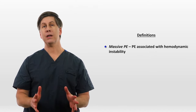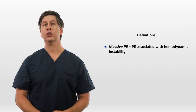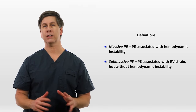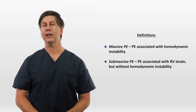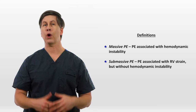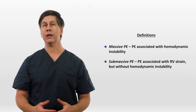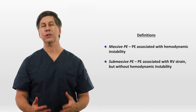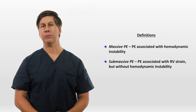A massive PE is one associated with hemodynamic instability. A submassive PE is one associated with objective evidence of right ventricular strain, typically seen on echo, but without hemodynamic instability.